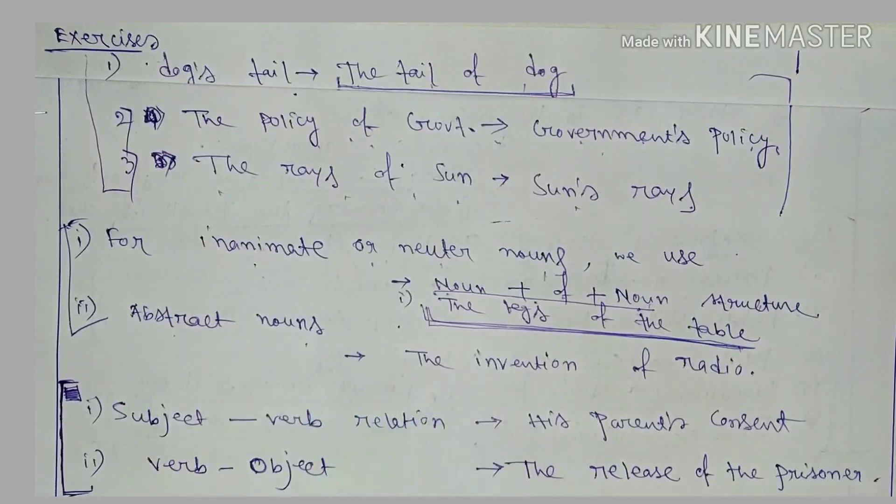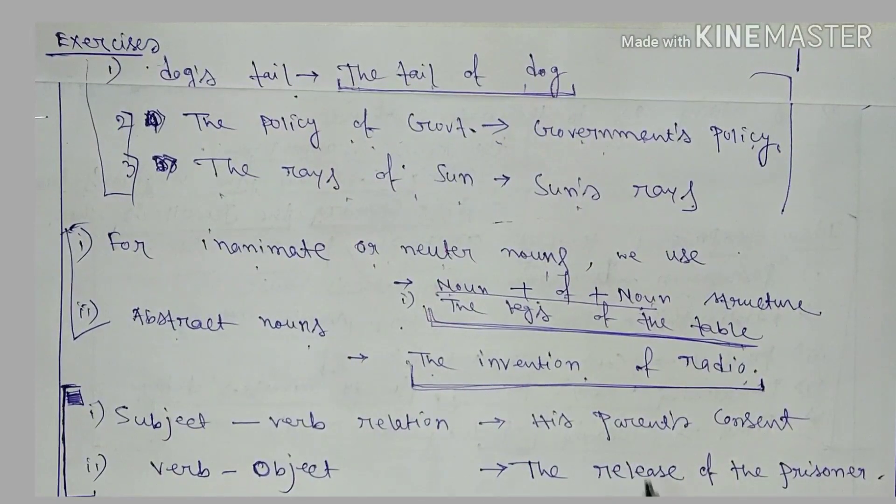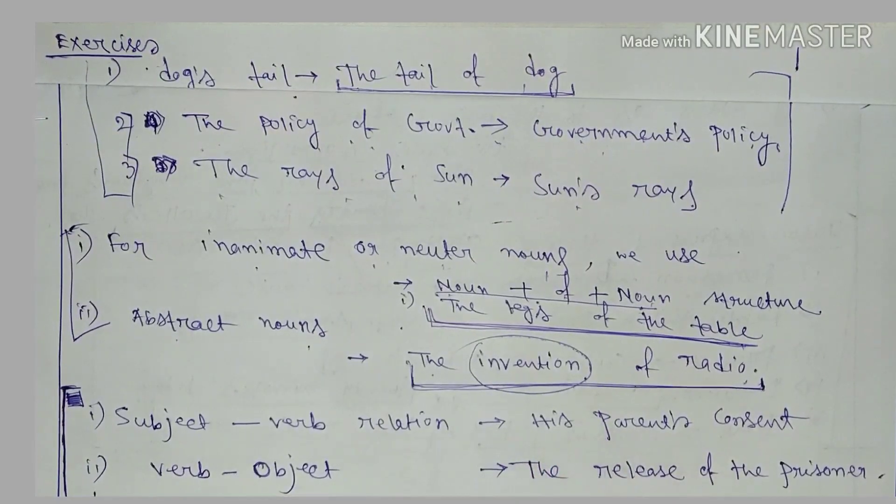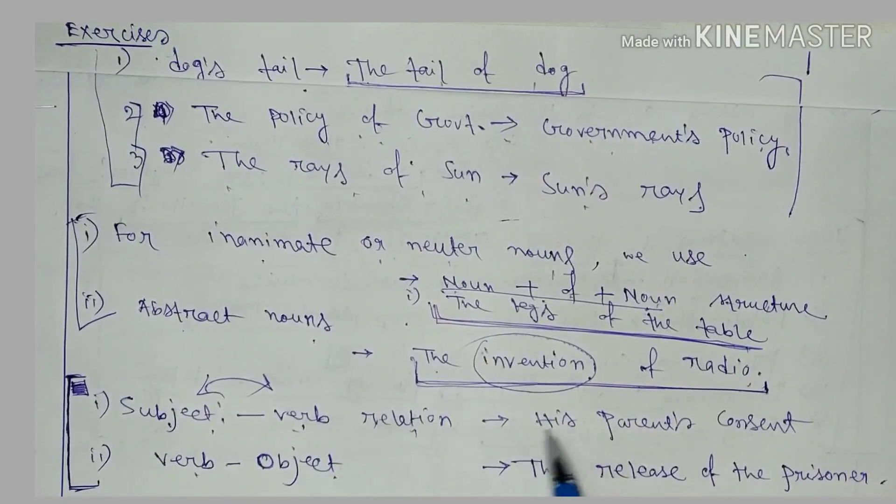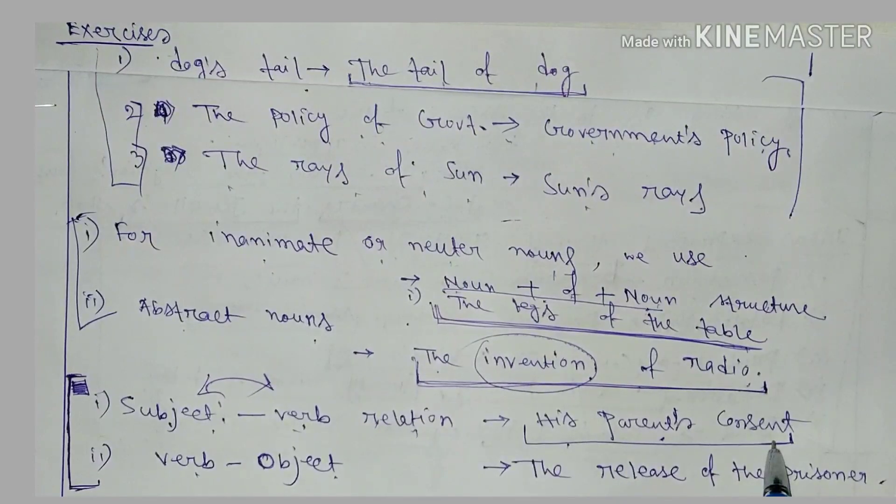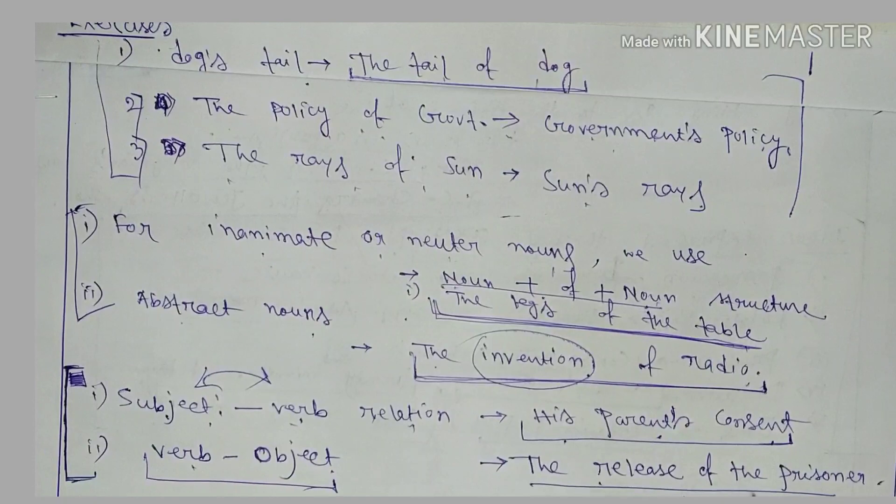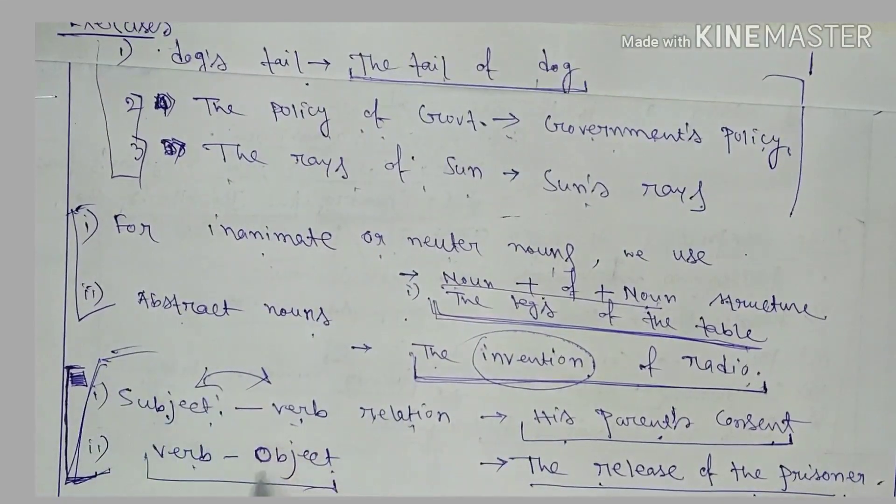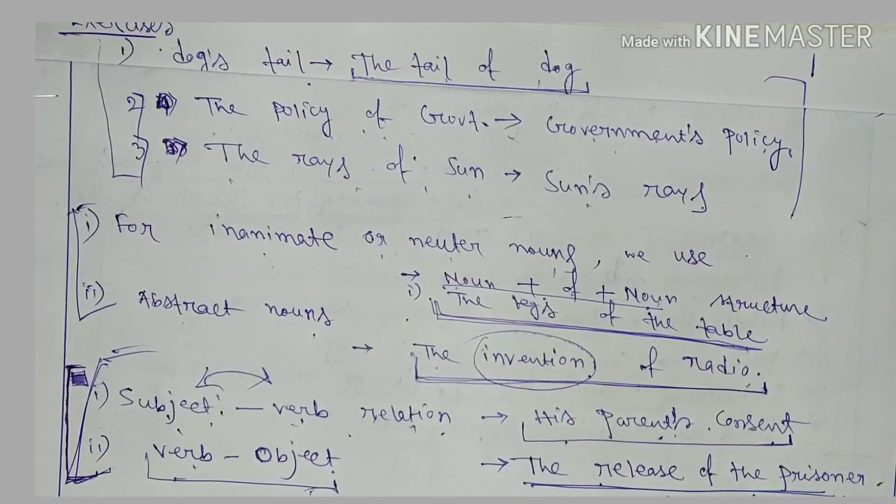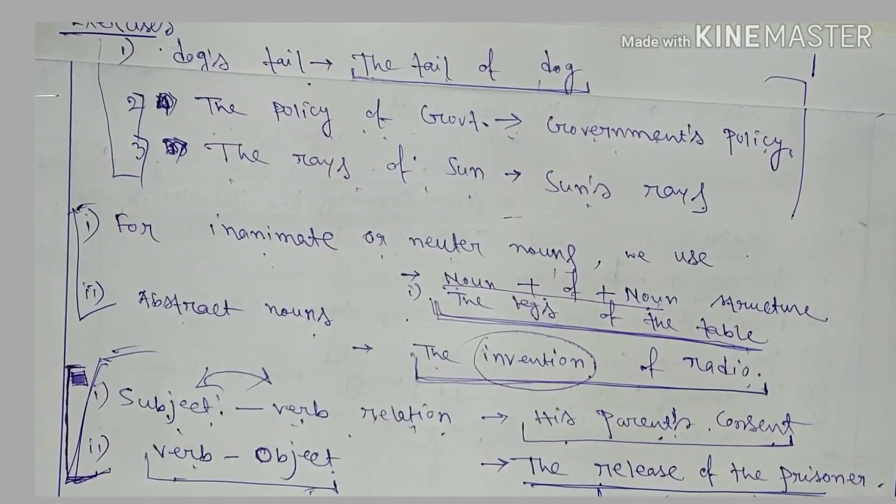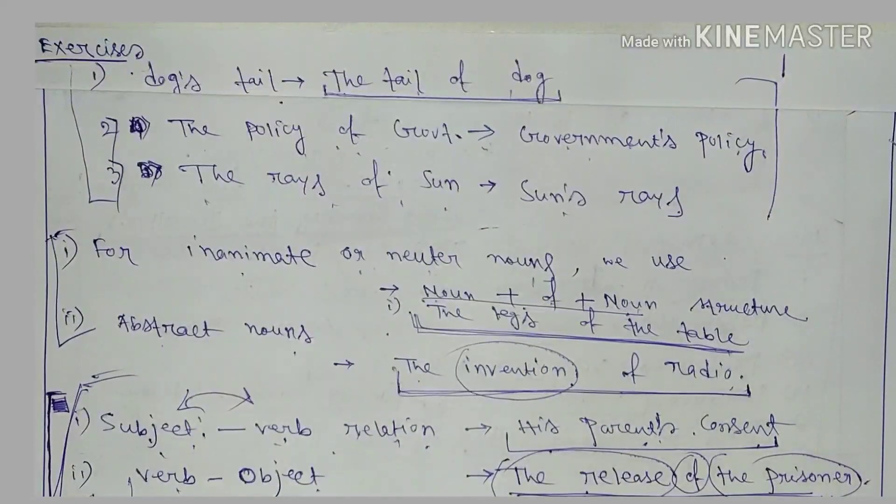Abstract nouns also use this structure, like the invention of radio. Invention is an abstract noun, so we use noun plus of plus noun format. Next, for verb-object relation, when subject and verb are together but we're talking about a particular part, we use noun plus of plus noun structure, like his parents' consent. When the whole part is the object, we use noun plus of plus noun structure, like the release of the prisoner. This is a very important subject-verb-object relation, so we use noun plus of plus noun structure.